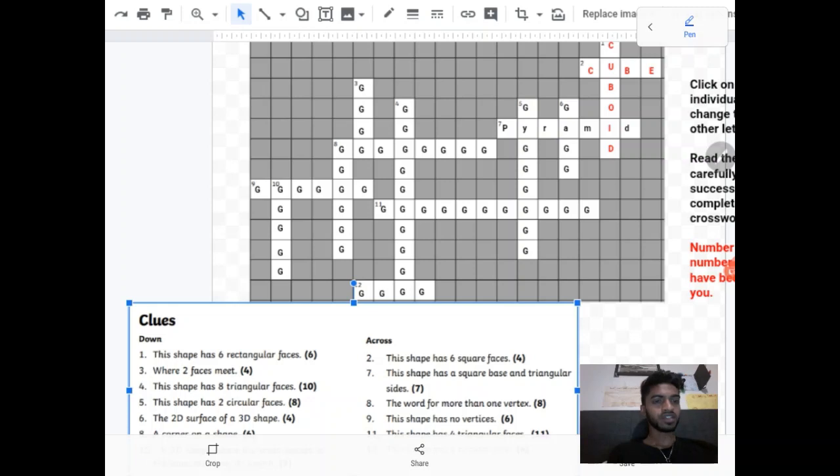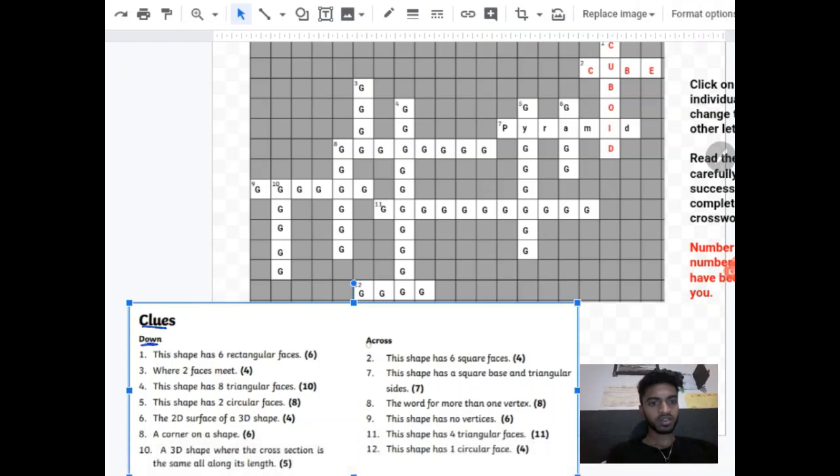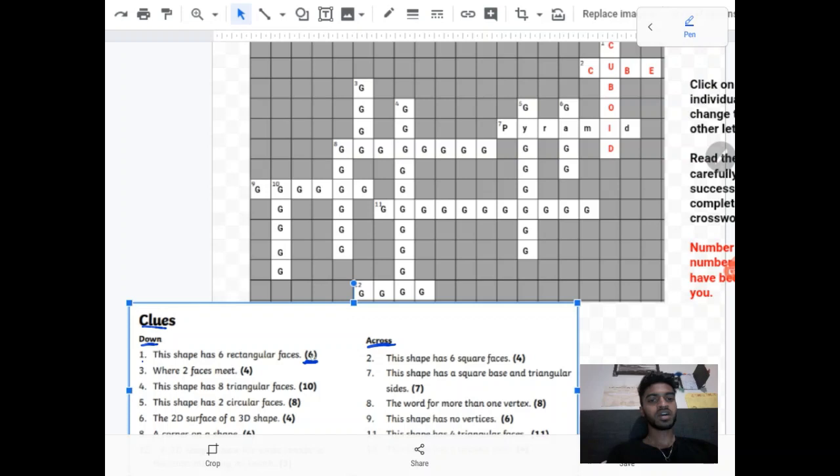Now first I'm going to go over how you solve crosswords. So if you'll notice you have the clues. Now you've got clues which go down and clues which go across. Let's begin with down. It says this shape has six rectangular faces and you'll see that in brackets there's a number. That number indicates how many letters there are in the answer.